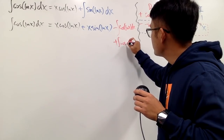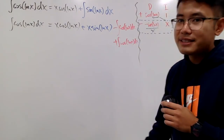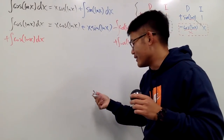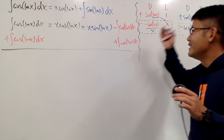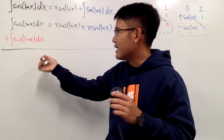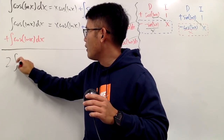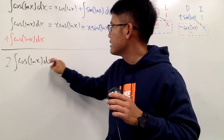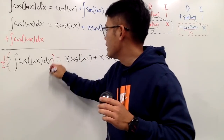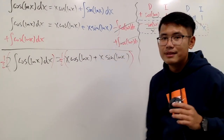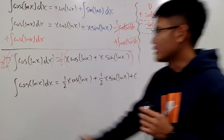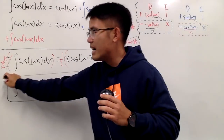The integral terms on the right cancel, and on the left this plus that gives 2 times the integral of cosine of ln x dx, equal to x cosine of ln x plus x sine of ln x. To get rid of the 2, multiply both sides by one-half. Finally, the integral of cosine of ln x dx equals one-half x cosine of ln x plus one-half x sine of ln x, plus c. Unbox the answer.